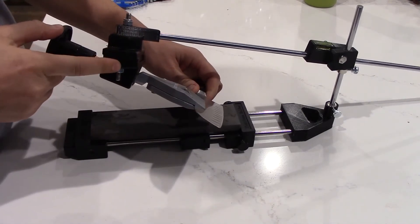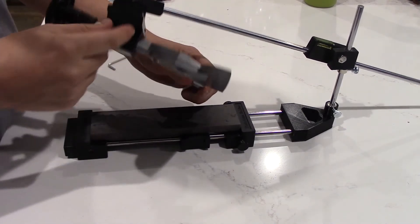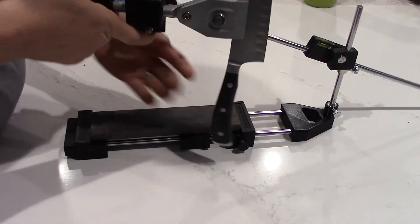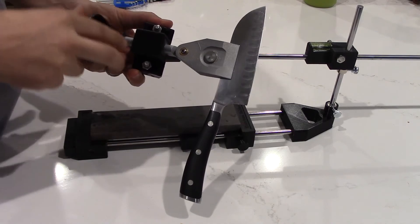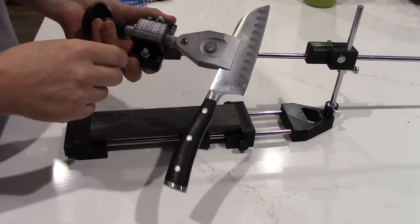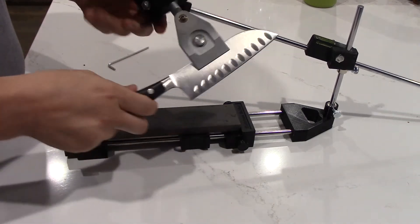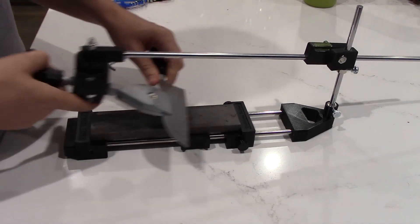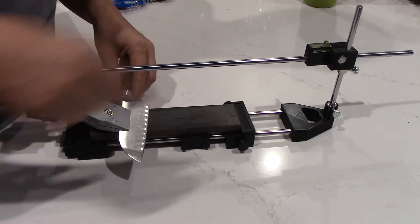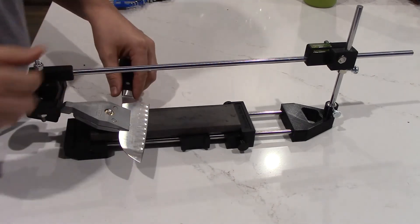I've already set it to 15 degrees. The way you set the angle is you loosen these bolts or nuts on both sides—there's two. I'll switch these to thumb nuts eventually. You just slide it back and forth, and I set it to 15 degrees. I've leveled this so the bar is horizontal.